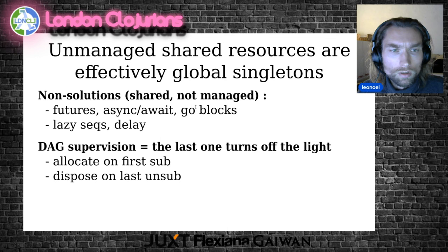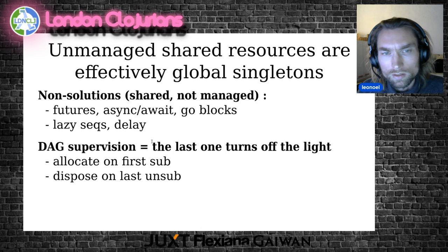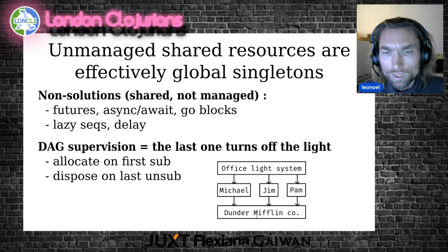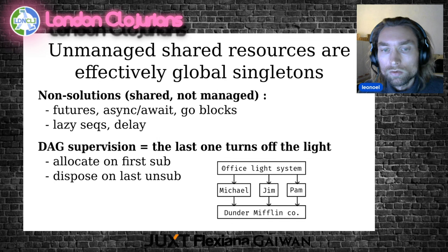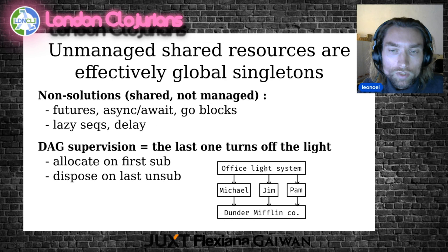All of these solutions are variations around the global singleton pattern, so that's not something we should use for local sharing. The right solution is in fact something we do all the time in the real world without even thinking about it. The right way to illustrate this is the idea: the last one turns off the lights. So this is a DAG for the real world. We have a company. The company supervises employees. The employees are resources — they are literally called human resources. And each employee shares responsibility for a technical resource, which is the lights. So it's a DAG.